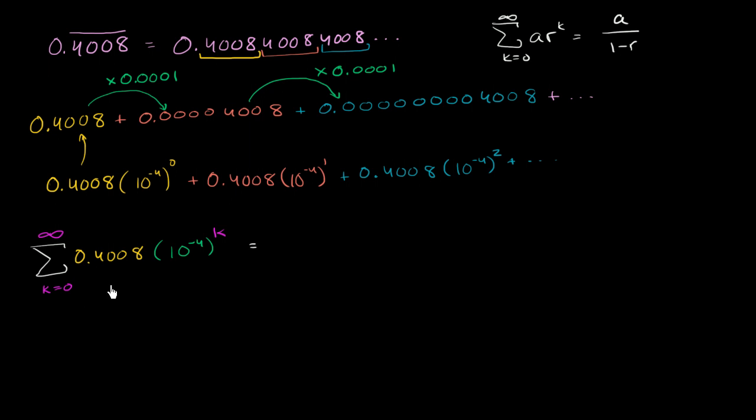So in this case, our a here is 0.4008, and it's going to be that over 1 minus our common ratio, minus 0.0001, 1 ten-thousandth. So what's this going to be? Well, this is going to be the same thing as 0.4008. If you take 1 minus 1 ten-thousandth, or you could view this as 10,000 ten-thousandths minus 1 ten-thousandth, you're going to have 9,999 ten-thousandths.